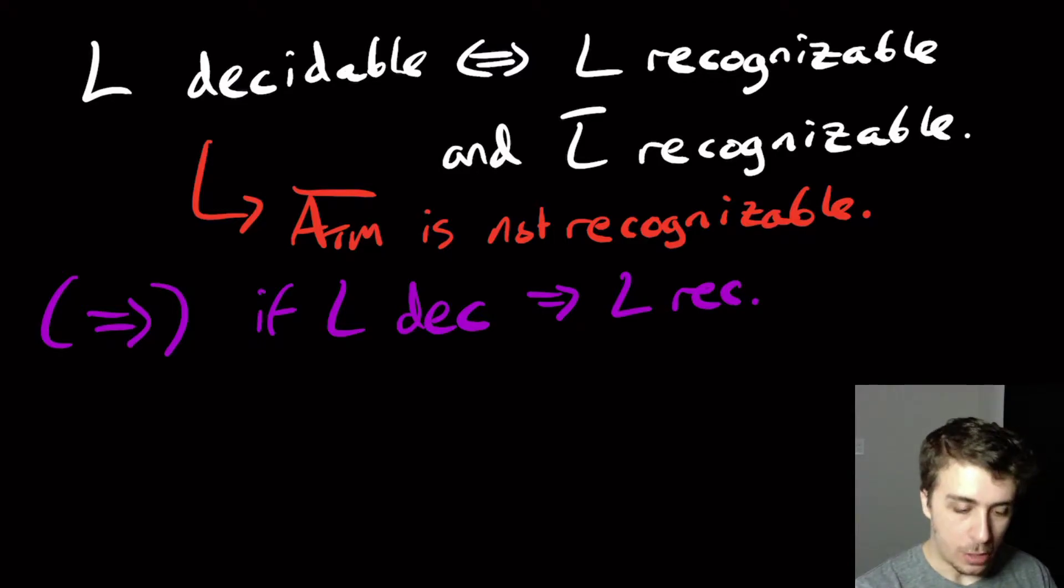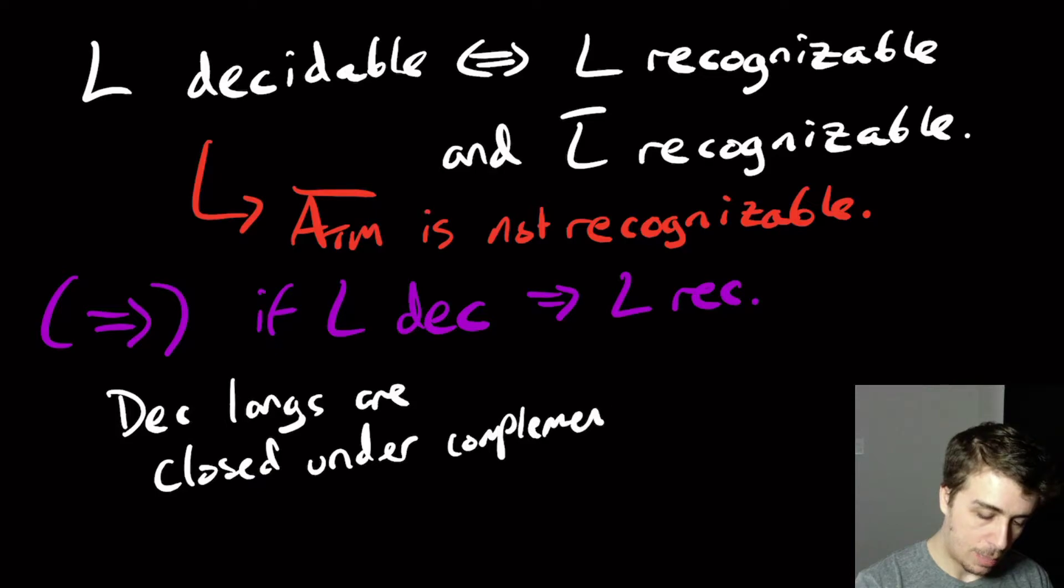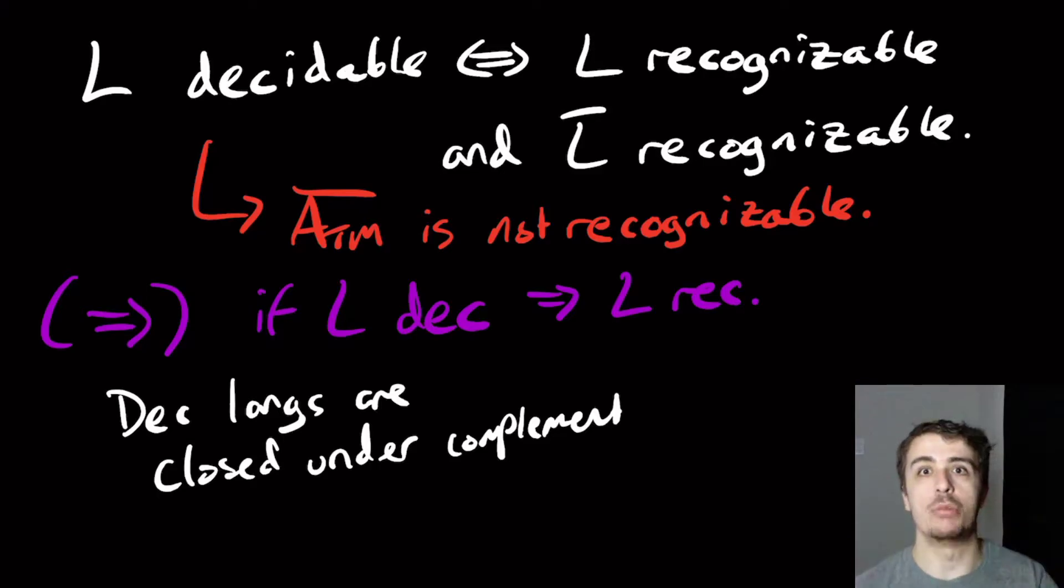It can even run forever on those. And one other thing that we can notice is that decidable languages are closed under complement because if the machine always halts, we can just swap the accept and the reject state. And if it went to the accept state before, it will hit the reject state now. And if it hit reject before, now it hits accept. And all inputs halted by assumption. And so therefore, they're closed under complement.